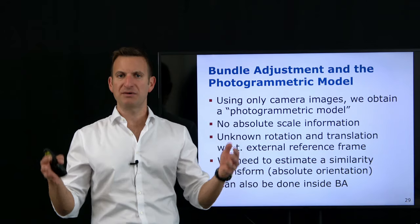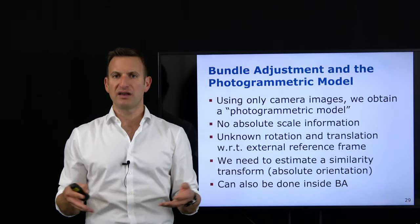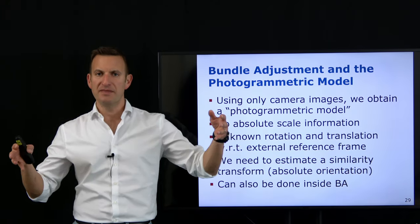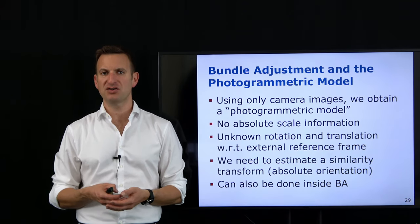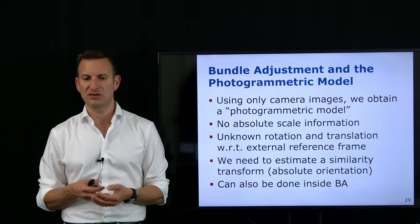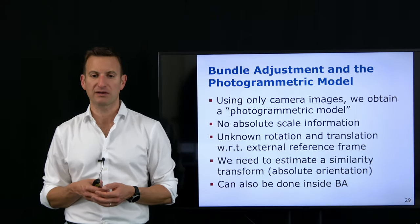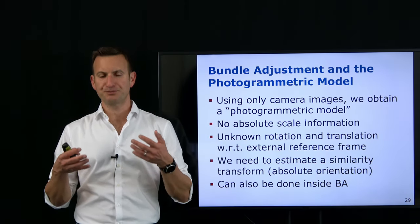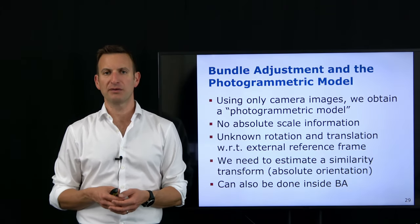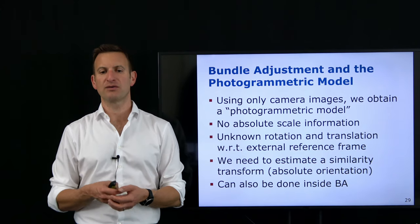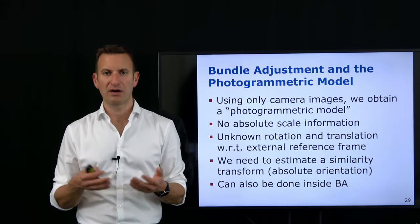Unless we have additional information — such as knowing the size of an object in the world, or knowing the translation between camera positions — we have an additional sensor, or some other known quantity — the scale is only defined up to a scale factor. So we need to fix the scale and the six-degree-of-freedom rigid body transform, summing to a similarity transform between our photogrammetric model and the real world.